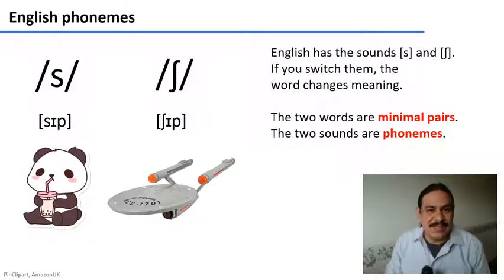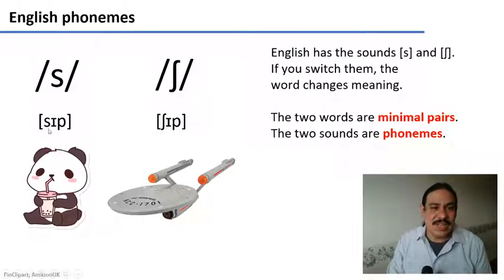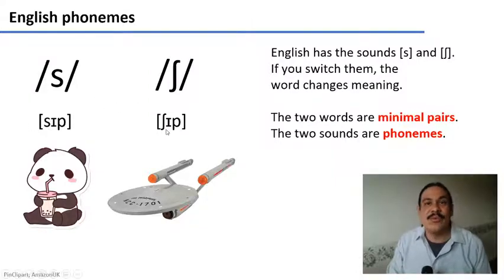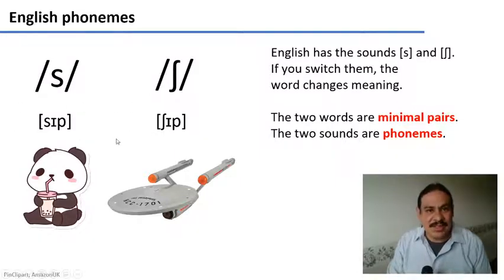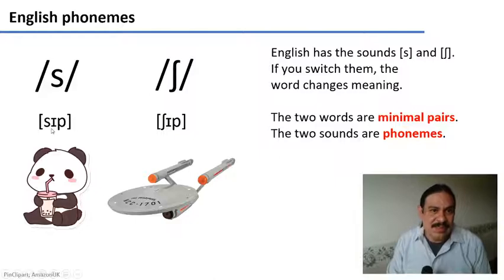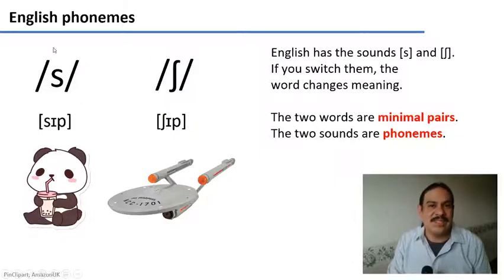How do we know they are phonemes? Because if we switched the sounds — if we changed /s/ for /ʃ/ — then SIP would become SHIP: a different word. We call these words minimal pairs. They are words where if you change one sound for another, the word means something else. SIP changed to SHIP: these two words are minimal pairs, and the two sounds are phonemes of English because they help us distinguish between meanings.